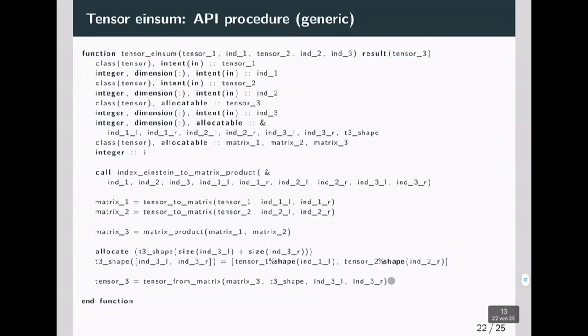As promised, the final implementation of the tensor einsum, which was the tensor contraction, is purely generic. From my tensor, I convert to a matrix. Then I do the matrix product, which actually could be a vector matrix product, or a vector vector dot product, or a matrix matrix product. Then I convert back to the matrix and I convert the matrix back to the tensor. And this is the result I get from the function.